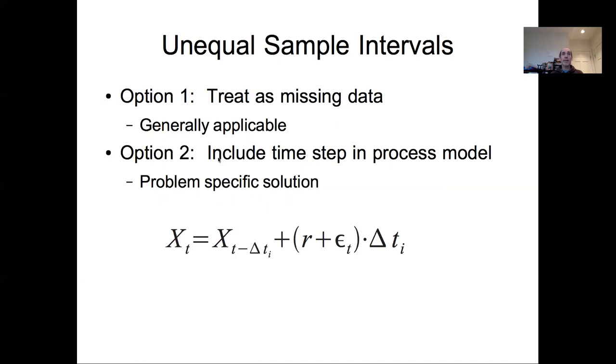Option two is to include time explicitly in your process model. That requires more of a problem-specific solution because you need to think through how to handle unequal time steps within your process model itself, while still accounting for how the process errors are accumulating over time.